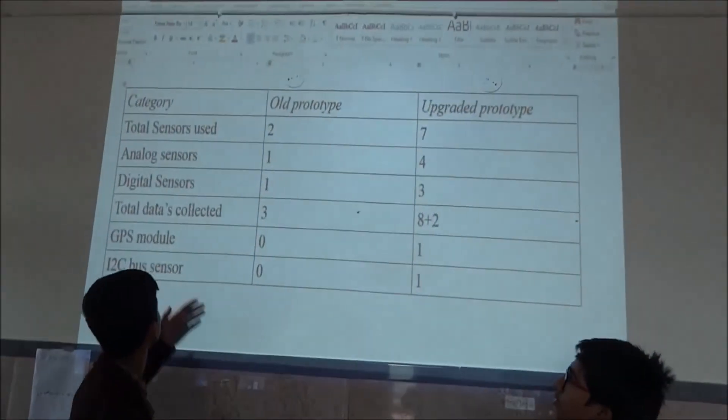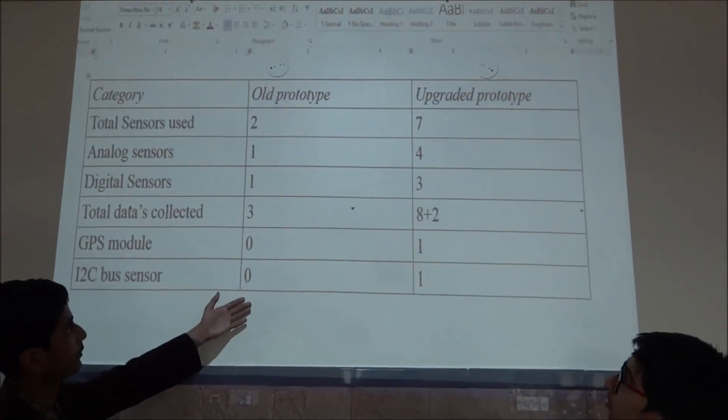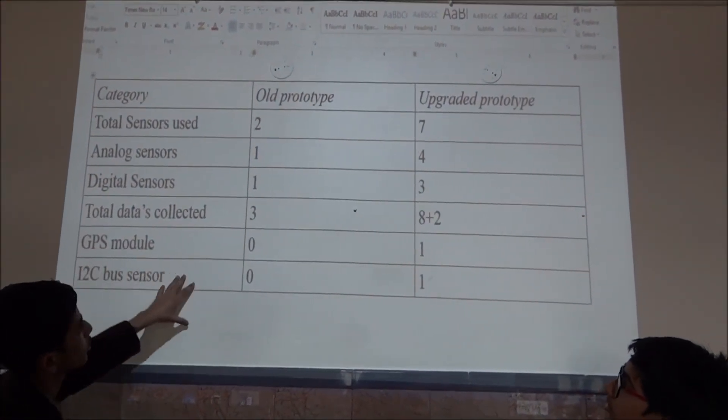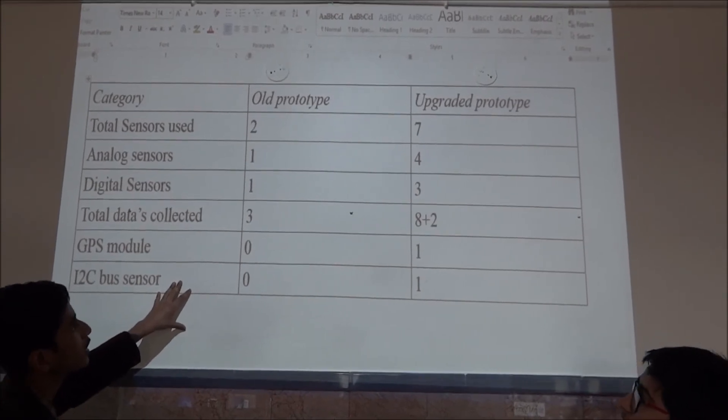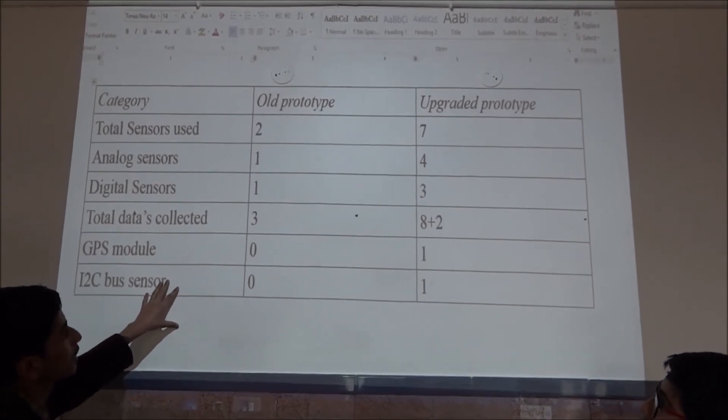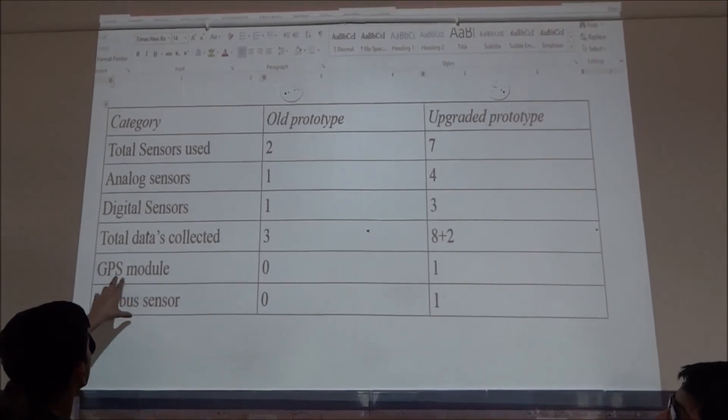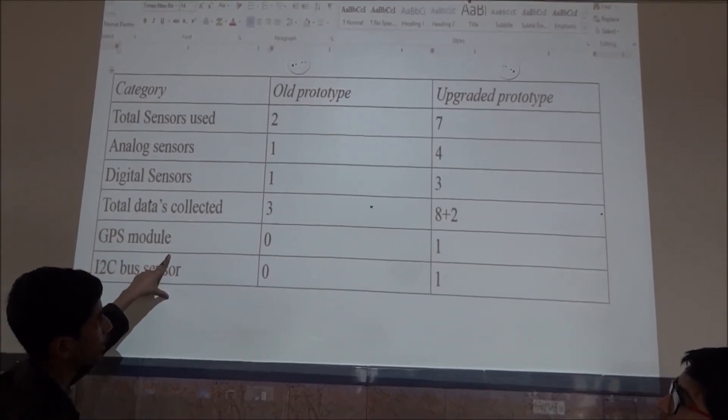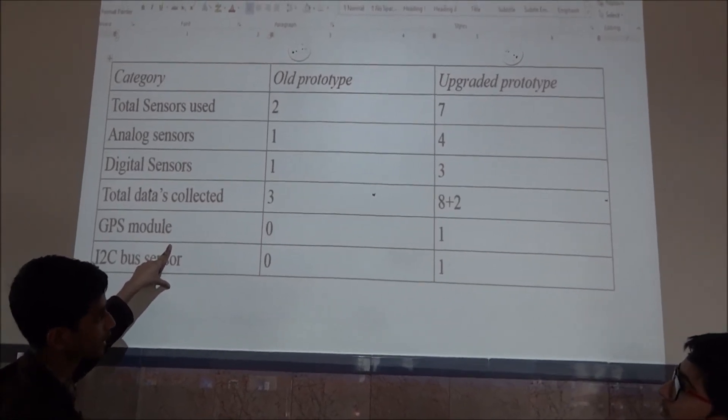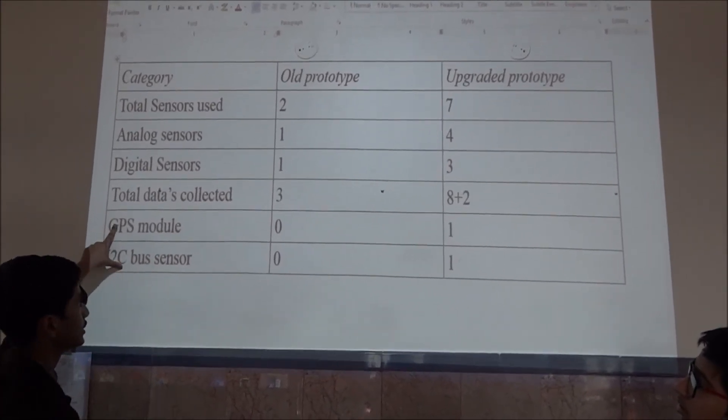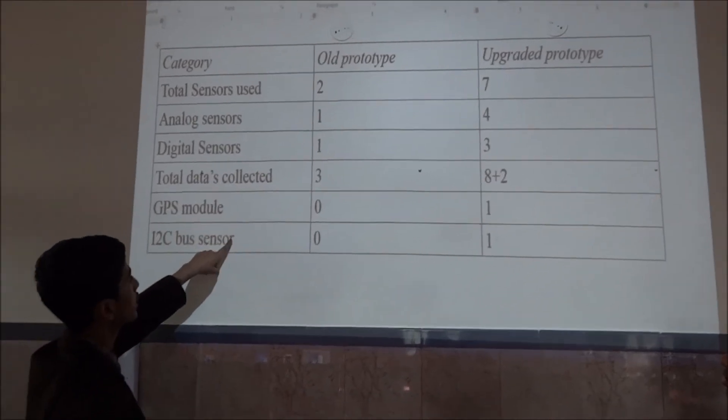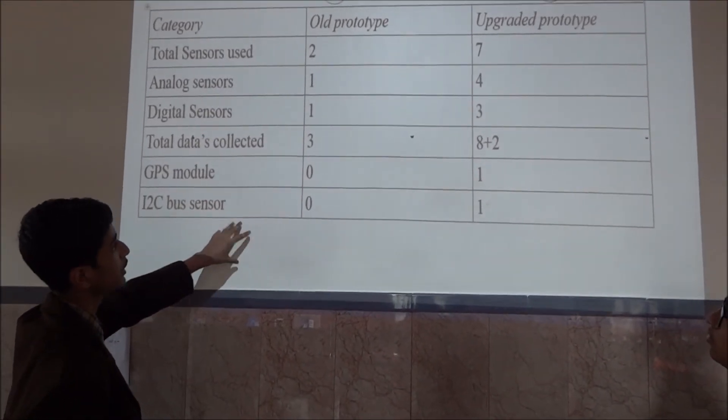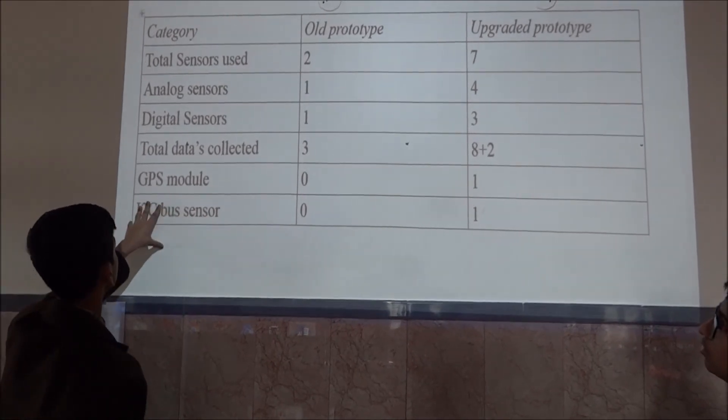Here, you can see that we have different categories and the prototype. So, for our first category, total sensor is changing. In our old prototype, we had just two sensors. But in our new prototype, we have upgraded it to seven sensors. Then, analog sensors. In our old prototype, we had just one analog sensor. But now, we have four analog sensors in our new prototype. Then, digital sensor. In our old prototype, we had only one digital sensor. But in our upgraded prototype, we have three digital sensors.